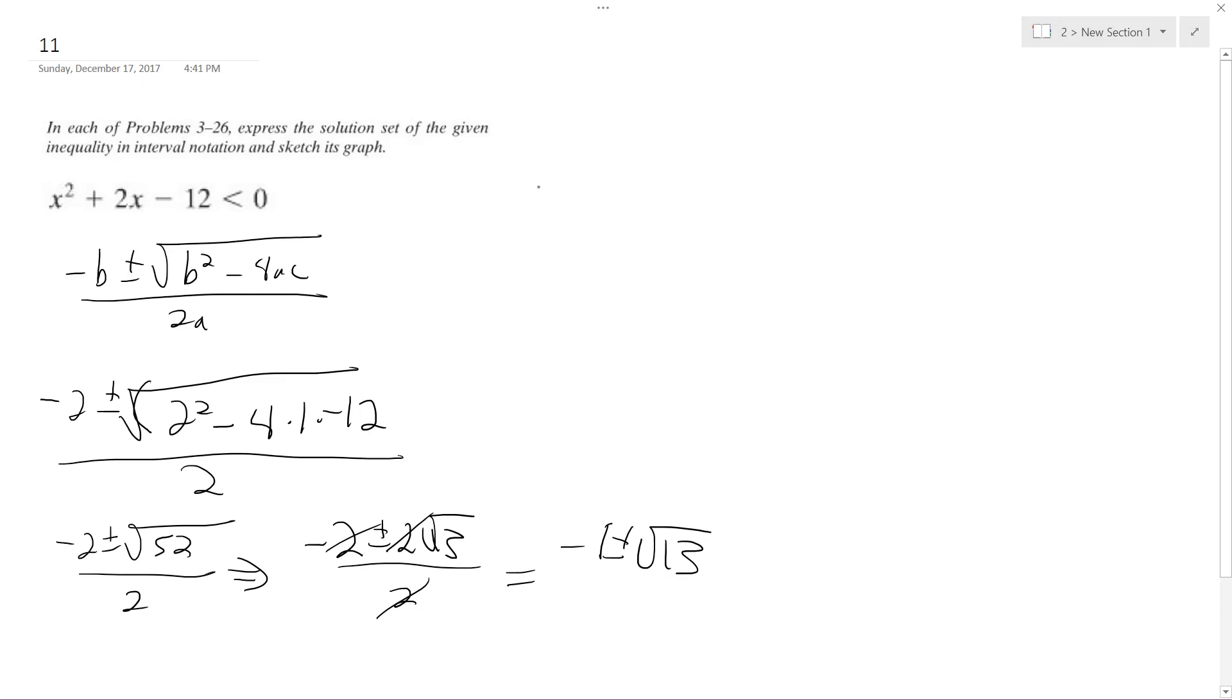So what this means is both of these have to be, when you combine both of these, they have to be less than zero. So x plus 1 minus square root of 13 and x plus 1 plus the square root of 13 are less than zero.